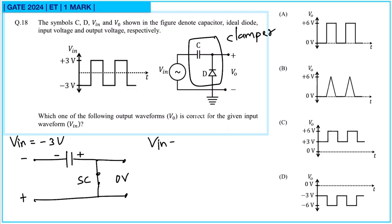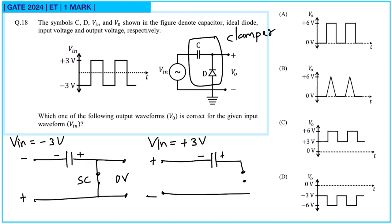When input voltage is equal to plus three volts, this will be plus and minus, and the capacitor is already charged with this polarity. In that case the diode will be reverse biased, so it will be open circuit. The output voltage will be this three volts plus the input three volts, so output will be six volts. So whenever input is minus three volts output is zero volts, and when input is three volts output will be six volts.